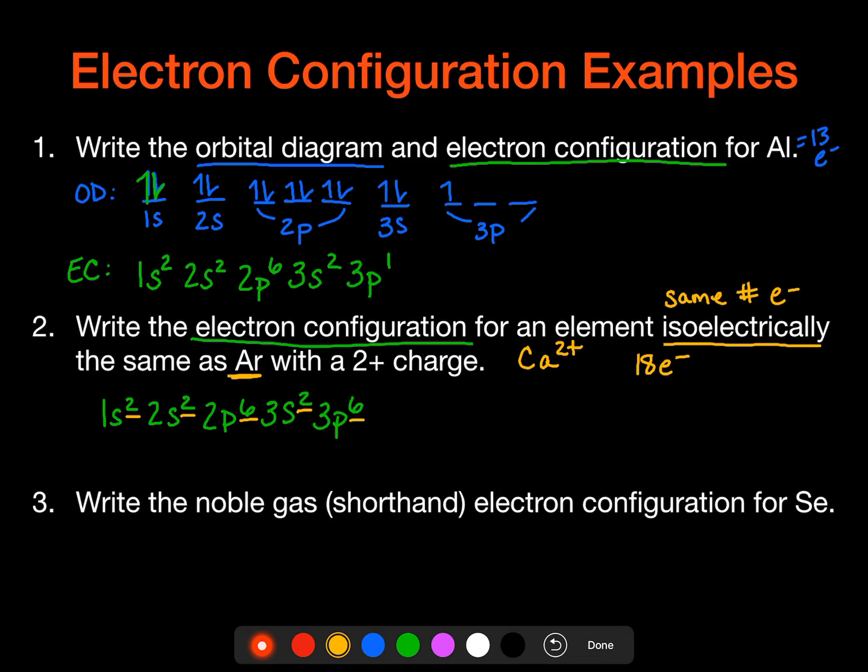The very last one is we want to write the noble gas or shorthand electron configuration for selenium. And so when we write our noble gas or shorthand electron configuration, we are going to write the previous noble gas symbol in brackets. And then we just complete the electron configuration after that. So if I look on the periodic table, selenium is number 34, and the previous noble gas is actually argon. So I'm going to put argon, A-R. The one that comes after selenium is krypton, but we have to have the previous one. And then we write the electron configuration for everything that comes after argon.